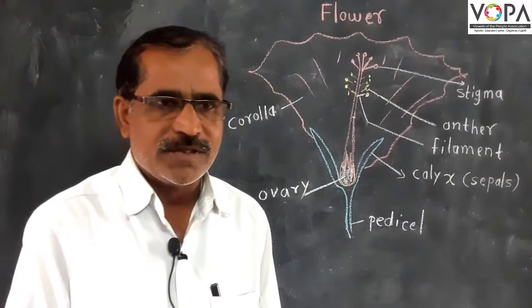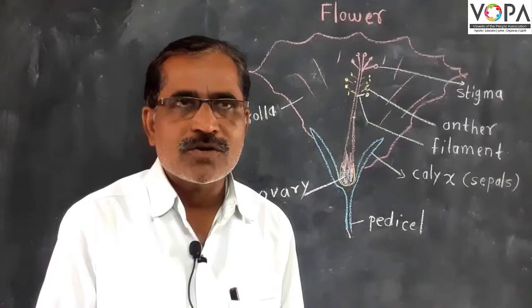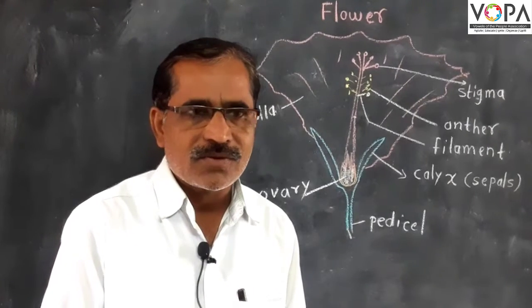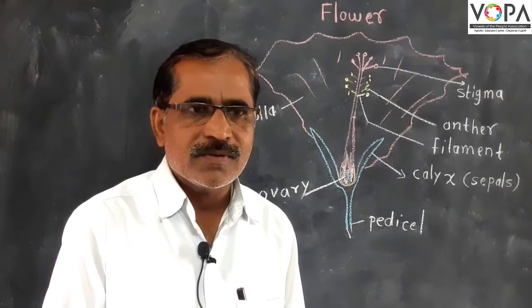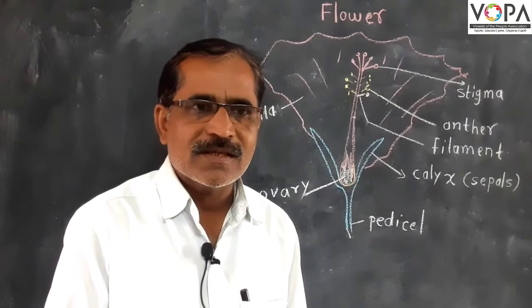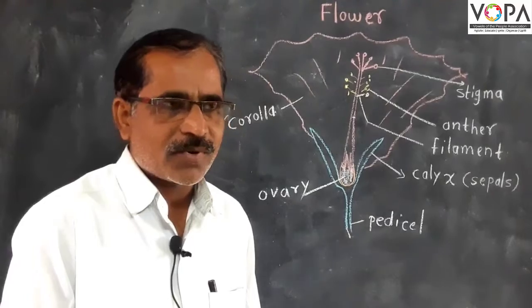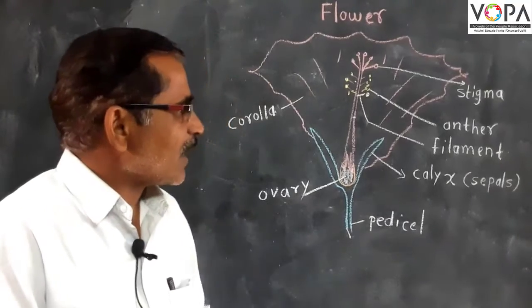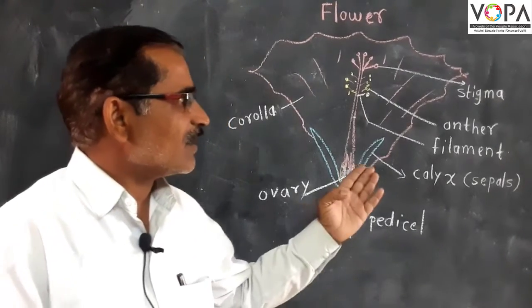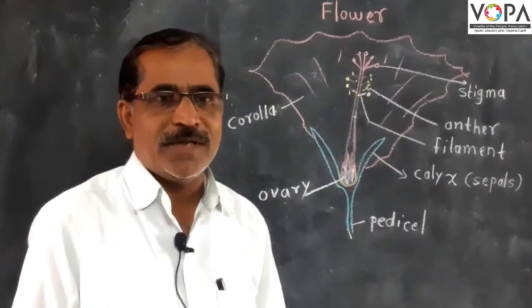The next part of the flower is androecium. Androecium consists of stamens, and stamens are made from the anther and filament.